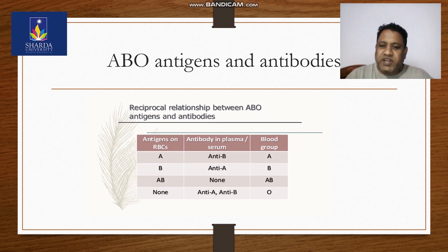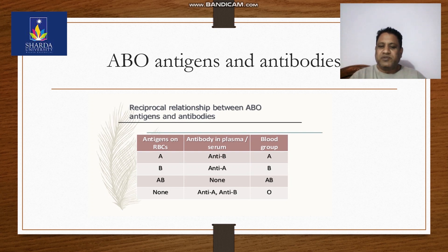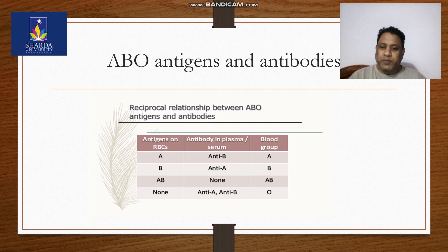ABO antigens and antibodies — the reciprocal relationship between ABO antigens and antibodies is clearly shown here. If antigen A is present and antibody B is present, the blood group is A. If the blood contains antigen B and antibody A, the group is B. If antigen AB is present and no antibodies are present, the group is AB. If no antigens and both antibodies are present, the group is O.